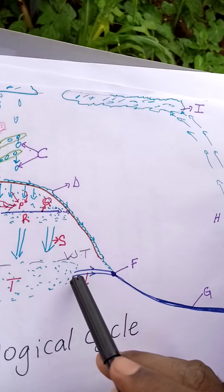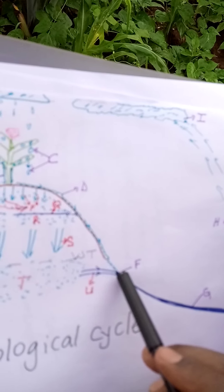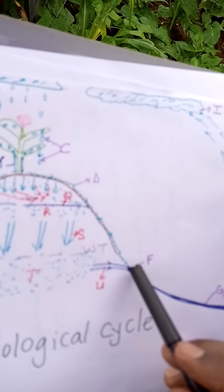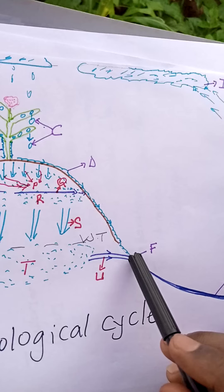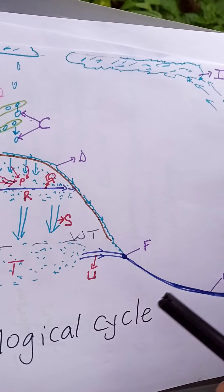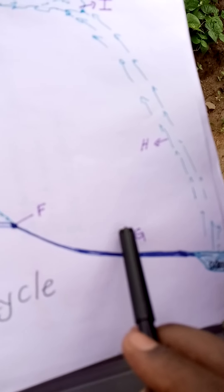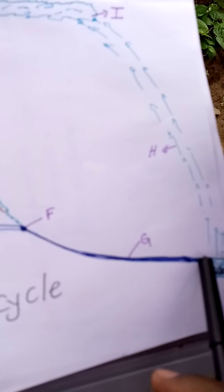When groundwater flow comes back to the surface, it makes a spring — so F on the diagram is a spring, the source of rivers. The whole section labeled G is a river, and it ends in an ocean, so this is the river mouth.